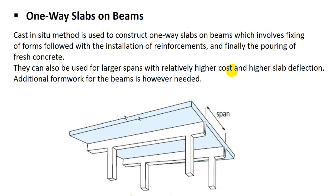Now I will discuss about one-way slab on beam. Cast-in-situ method is used to construct one-way slab on beams, which involves fixing of forms, followed by installation of reinforcement, and finally the pouring of fresh concrete. They can also be used for larger spans with relatively higher cost and higher slab deflection. Additional formwork for beams is however needed. The length-to-width ratio will be more than 2.